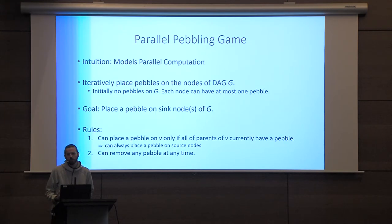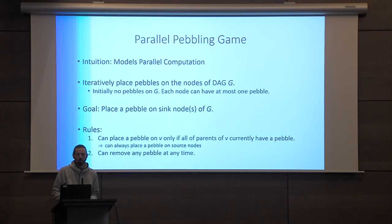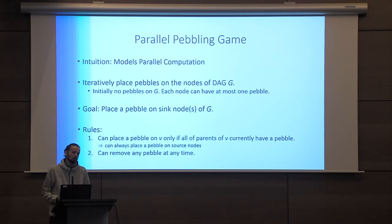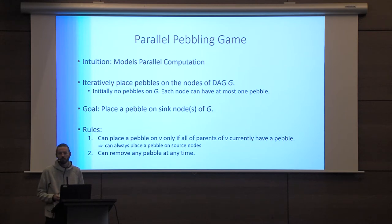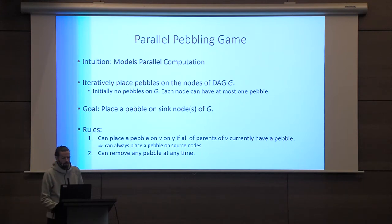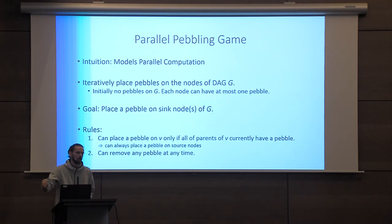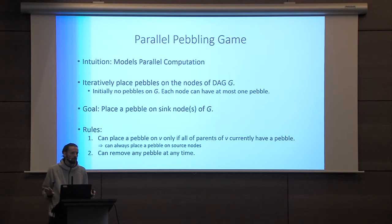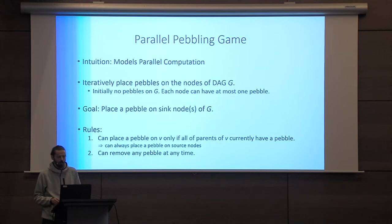In order to reason about cumulative memory complexity, particularly in the random oracle model, a useful simplified computational model has been developed: the parallel pebbling game. This builds on the black pebbling game from the 1970s and intuitively models parallel computation. This is a computational model over a DAG — directed acyclic graph — involving placing pebbles on nodes of the graph, done iteratively one round at a time. The goal is simply to place a pebble on the sink of the graph.